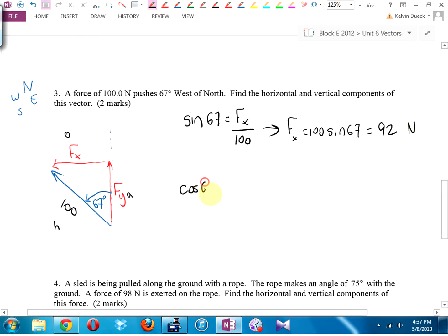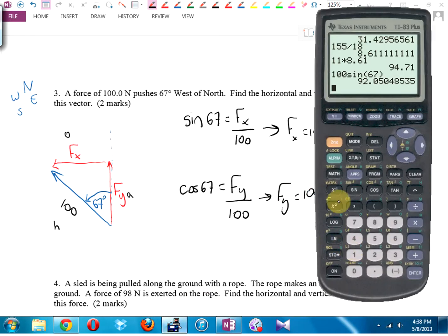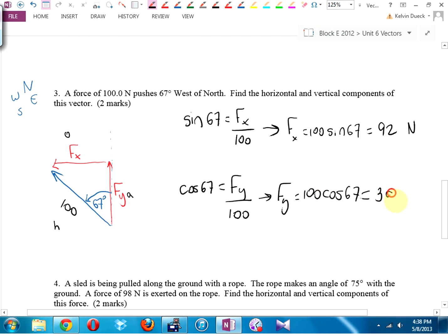I think cos sign of 67 is going to be vertical over 100. I think vertical is going to be 100 cos 67. I think it's going to be, hey, I'm just going to go backspace and change the sine to a cos. 39.1, or just 39 newtons. What about the directions, Mr. Duick? You know what? The components include the directions. You could say for a direction for vertical north, and you could say for horizontal to the left west. That's fine.